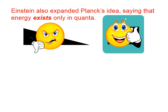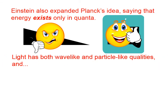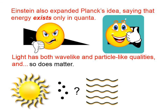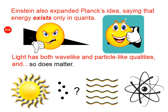For example, consider how many cousins you have: you can have one cousin, two, three, etc., but you can't have 7.4 cousins — it's not allowed; it doesn't exist. And what we've found through many experiments is that light has both wave-like and particle-like qualities, and oddly enough, so does matter. Light sometimes behaves like a particle — a particle of light we call a photon — but sometimes it behaves like a wave. So do subatomic particles like electrons: we think of them often as particles, but they also have wave-like characteristics.